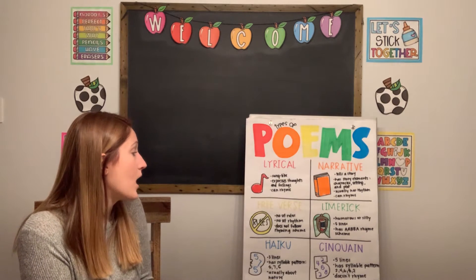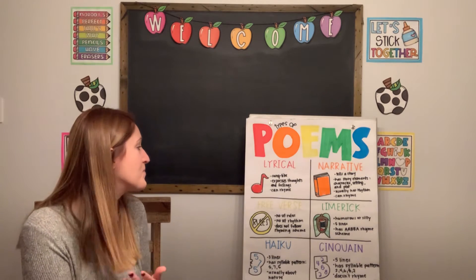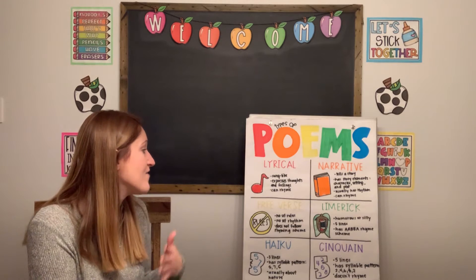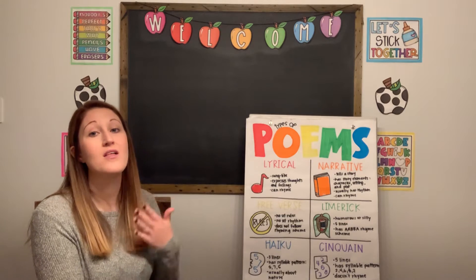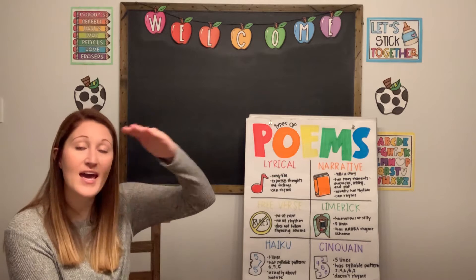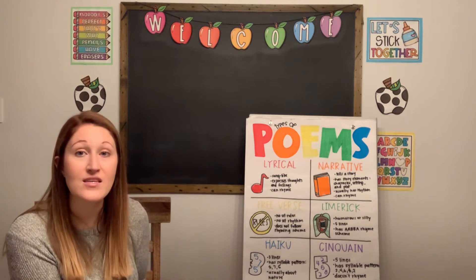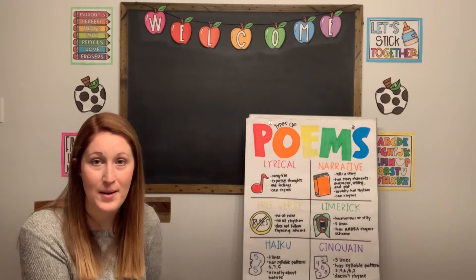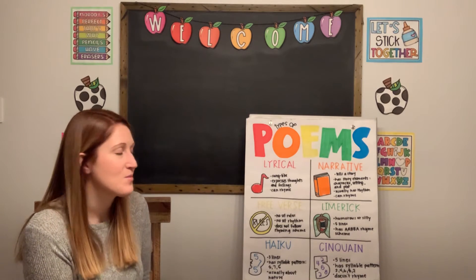Another type of poem is a limerick. Limericks are oftentimes humorous or silly. They typically have five lines and they have an AABBA rhyme scheme. The letters refer to the lines — so those that are A's, their last word will rhyme, and those that are B's, their last word will rhyme. The key to limericks is that they're oftentimes very silly poems.